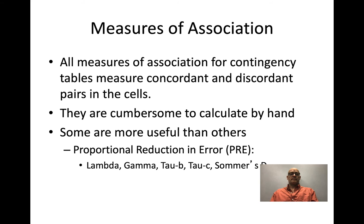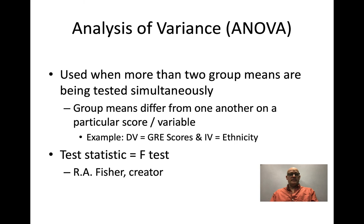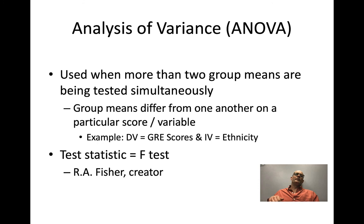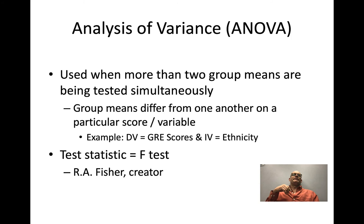Another analysis that looks like a contingency table is Analysis of Variance, or ANOVA. ANOVA is like a contingency table except it also uses means. What analysis of variance does is compare the difference between means, while also comparing variance between groups and within groups. The creator is R.A. Fisher, and we get an F statistic — just as a t-test gives a t-statistic and a chi-square test gives a chi-statistic.